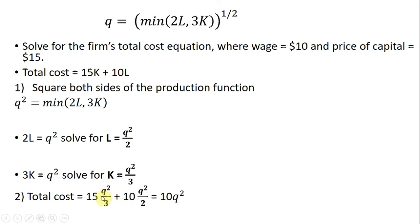And so we'll get 5Q squared plus 5Q squared. So total cost equals 10Q squared.